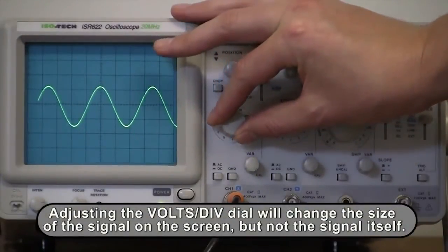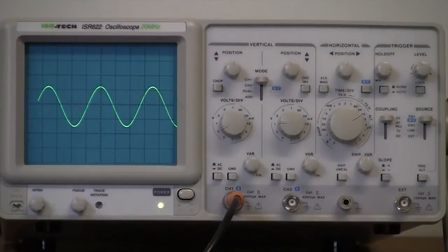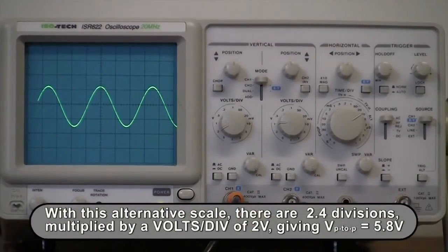Adjusting the volts per division dial will change the size of the signal on the screen, but not the signal itself. With this alternate scale, there are 2.4 divisions multiplied by a volts per division of 2 volts, giving a peak-to-peak voltage of 5.8 volts.